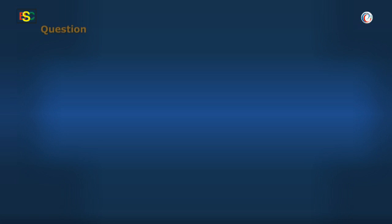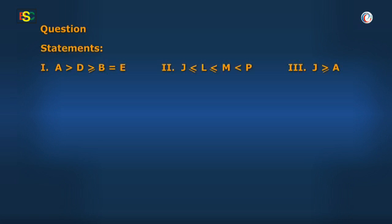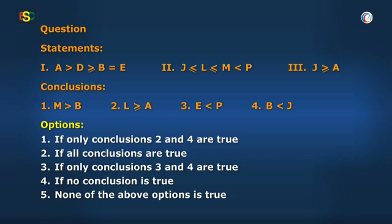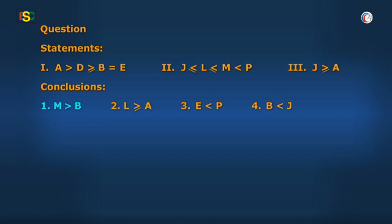Here is another question. The statements and the conclusion are given on the screen, and the options are as follows. Conclusion 1 is given as M is greater than B. But there is no statement here that contains both letters M and B. Letter M is present in the second statement and B in the first one.